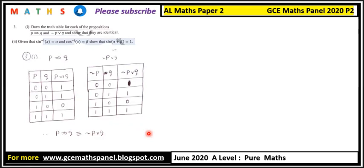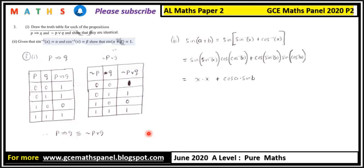The b part of question three reads: given sine inverse of x equals alpha and cosine inverse of x equals beta, show that sine of alpha plus beta equals one. This is one of the questions many students have been asking about. I apologize for doing it late — we have been delayed by technical issues, school work, and other things.